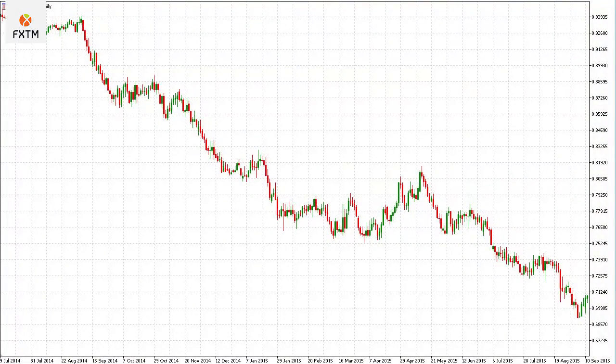This second chart is a good example of a period of time when the fundamentals agreed with the underlying trend of the currency pair. So in this circumstance, the commodity prices were falling, and of course that is a negative for the Australian dollar relative to the U.S. dollar. Therefore, we would expect that this trend should also be falling, and in fact it was.